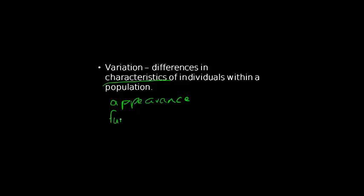The second characteristic is function. We're thinking of adaptations — physiological adaptations. Function would include endothermy or ectothermy, whether they lay eggs, whether they have internal fertilisation or external fertilisation. And finally, the other characteristic we'll be looking at is genetic makeup — the genes that make up the organism.